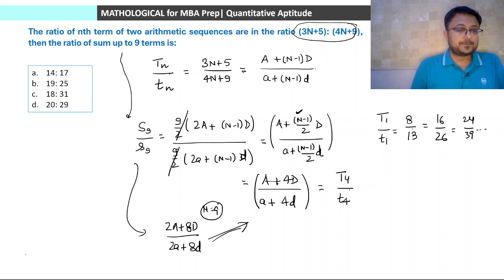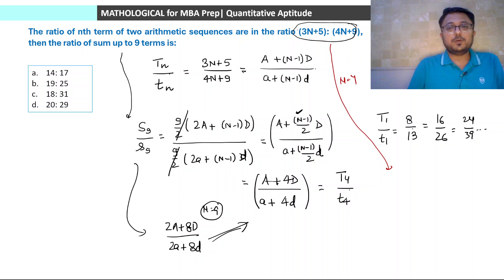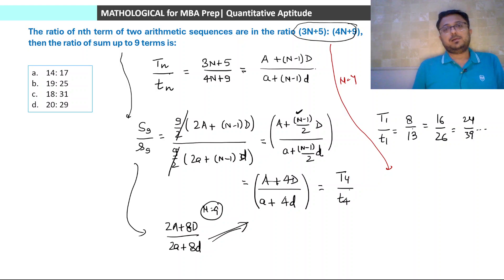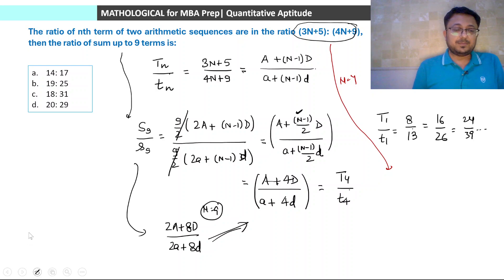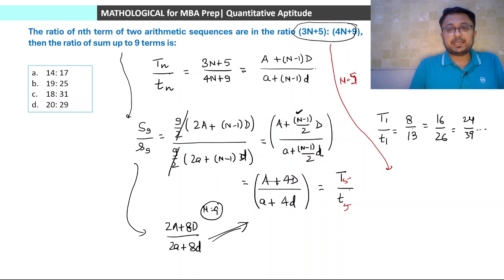Option D is our answer because we got the fifth term - a + 4d is the fifth term, not the fourth. Now there is another approach we can also look at. Since we ultimately want a ratio, we can assign values. If first term ratio is 8/13, then first series has first term 8c and common difference 3c (coefficient of n), and second series has first term 13c and common difference 4c. Then sum of 9 terms ratio is: (9/2)(2×8c + 8×3c) / (9/2)(2×13c + 8×4c) = (16 + 24)c / (26 + 32)c = 40/58 = 20/29.